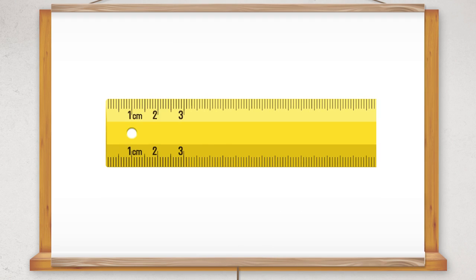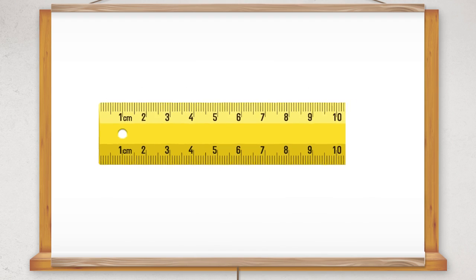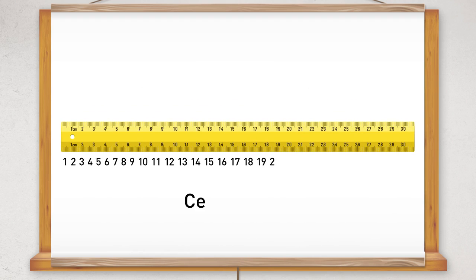On this ruler, here are the centimeters and all the lines in between are the millimeters. A standard ruler can measure lengths up to 30 centimeters.